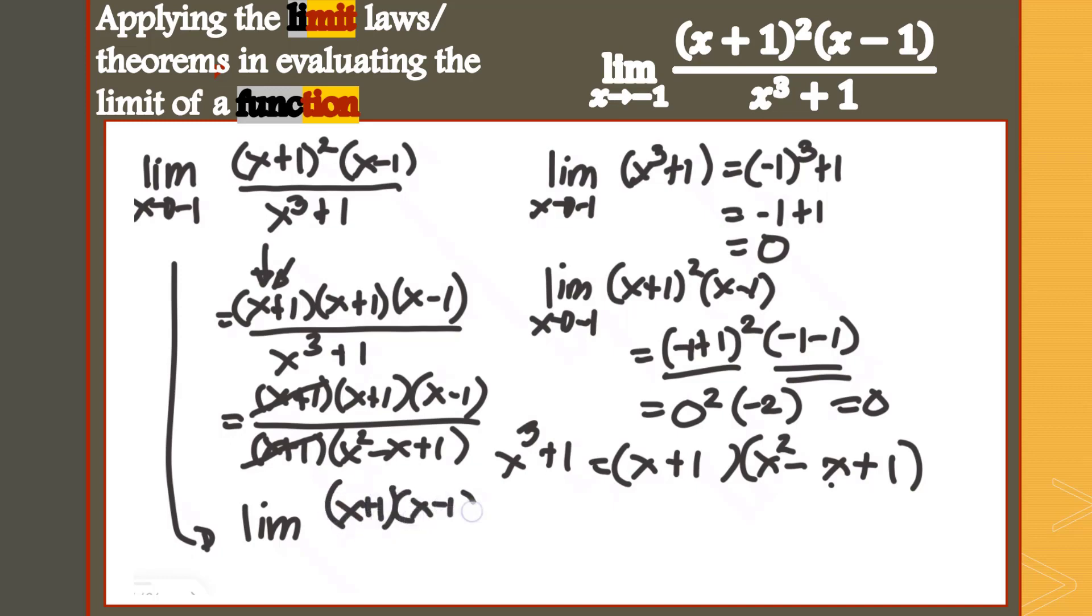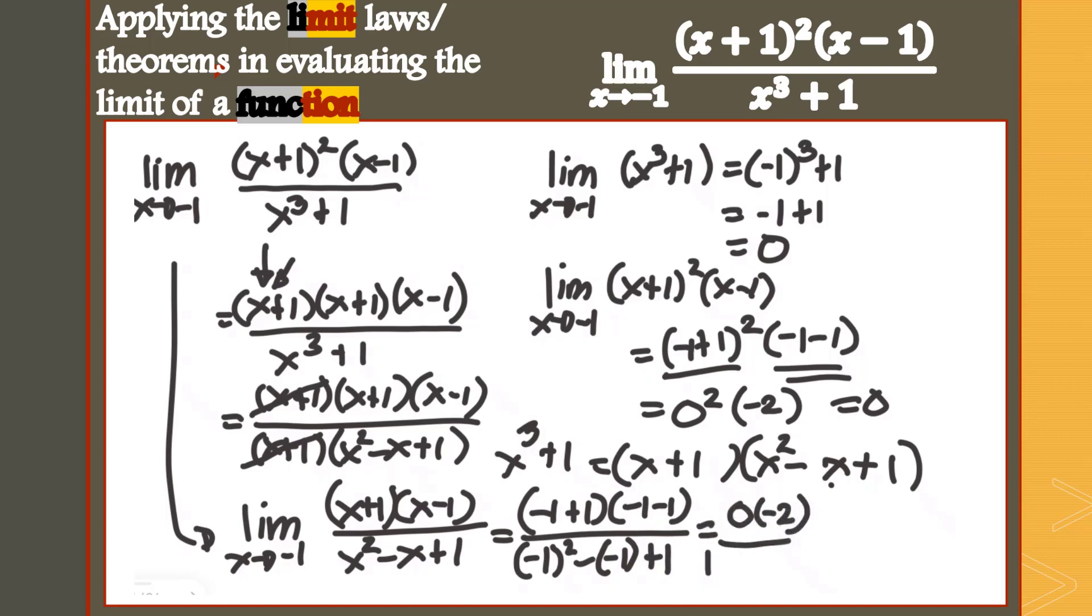We would still see a 0 in our numerator because that's (negative 1 plus 1) times (negative 1 minus 1). Our denominator will be the square of negative 1 minus negative 1 plus 1. So that's 0 times negative 2. That's 1 plus 1 plus 1. So 0 over 3, which is just equal to 0.